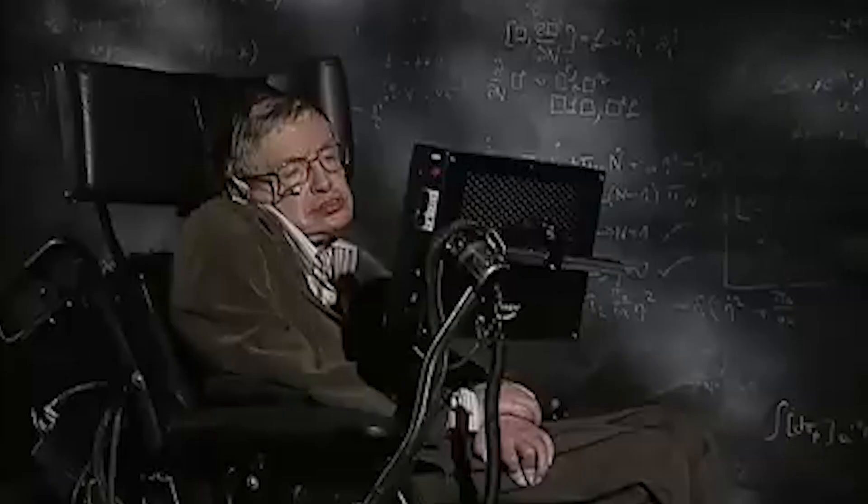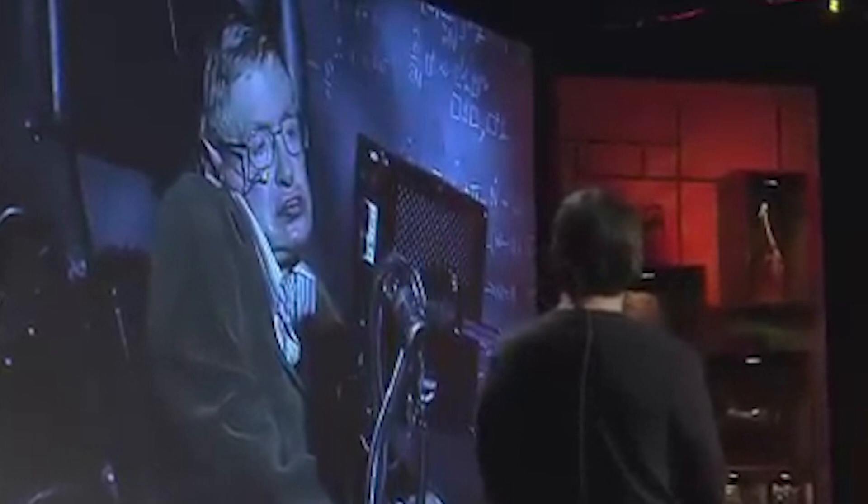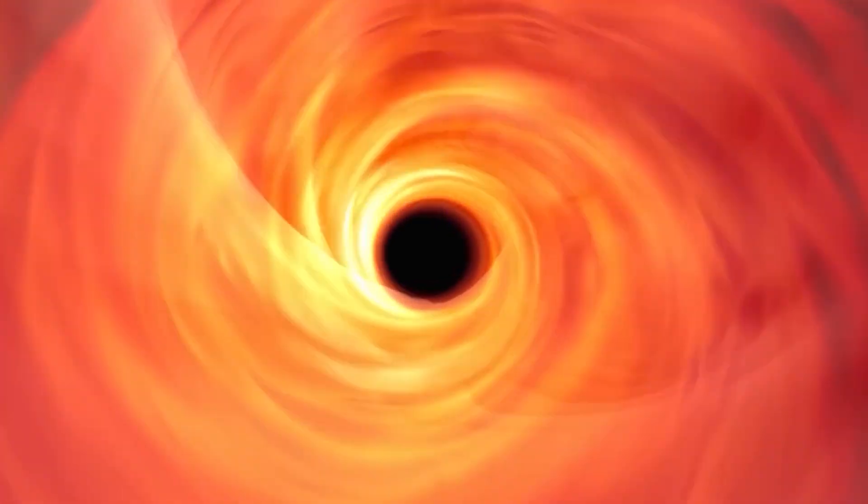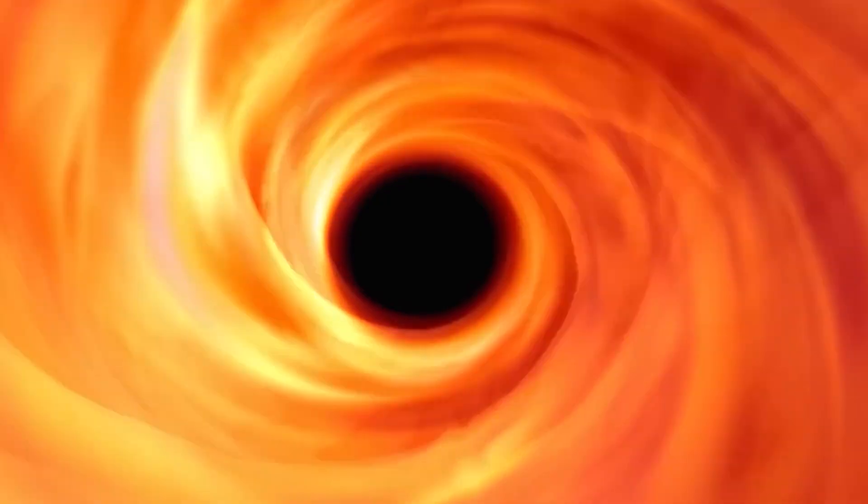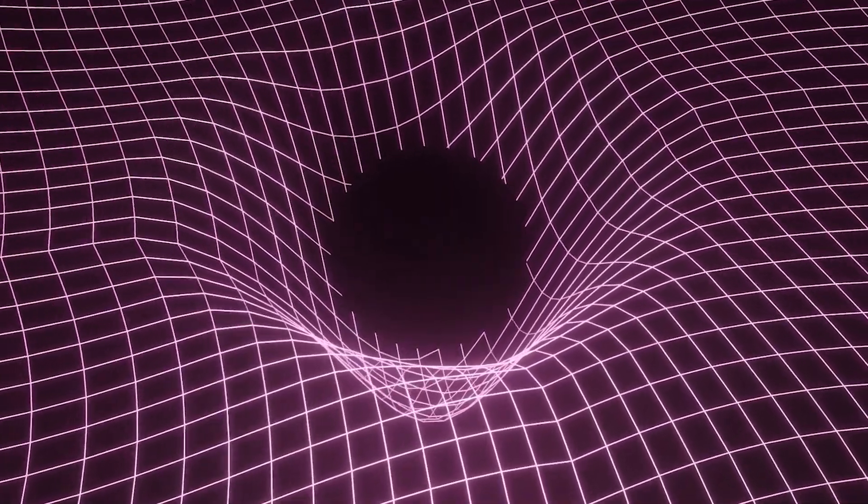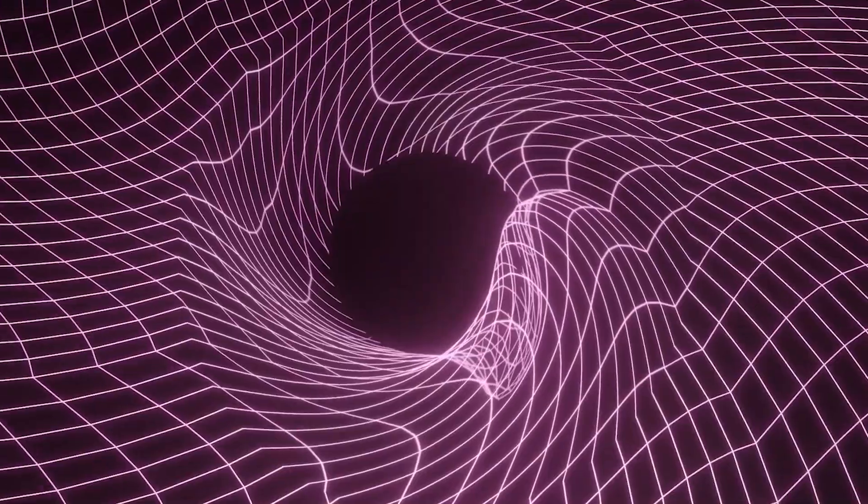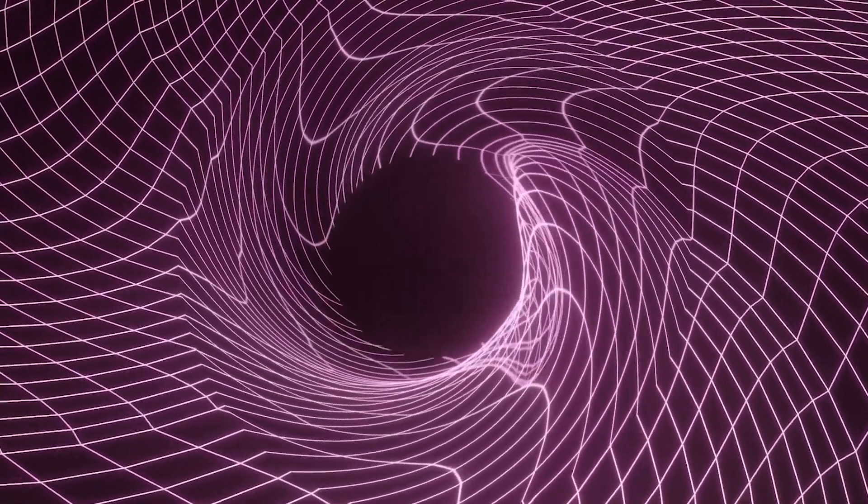a discovery by Stephen Hawking changed everything. He revealed that black holes actually glow. This means that, somehow, they are leaking information from the very place where all theories insisted nothing could escape. That discovery ignited one of the greatest paradoxes in modern physics, a mystery that has baffled scientists for nearly half a century.